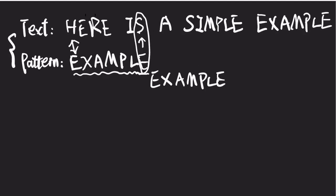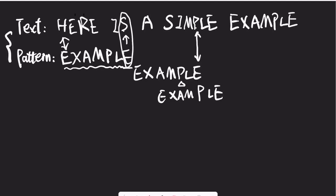Every time after we skip, we need to start from the rightmost position again. In this case, P is different from E. But this time, P exists in the pattern string, so we need to align it to P. Every time after we skip, we need to compare from the rightmost position again.